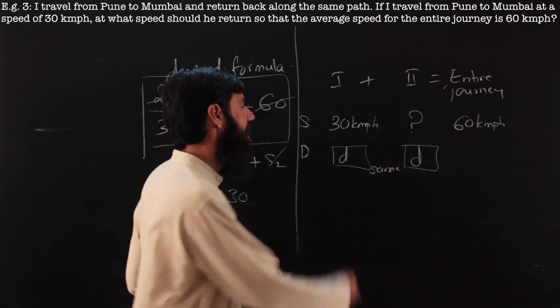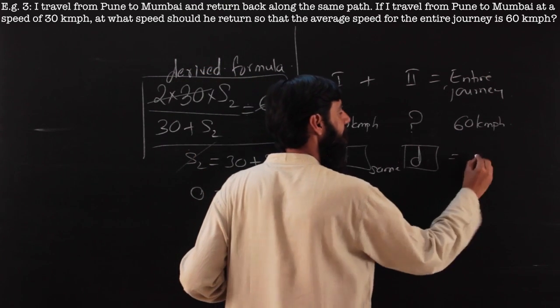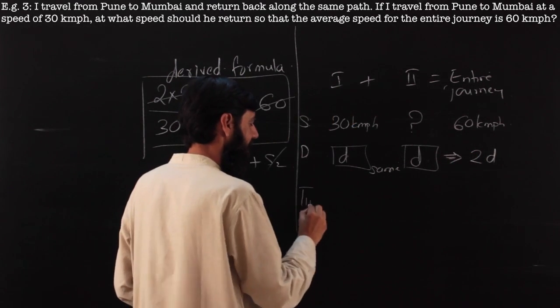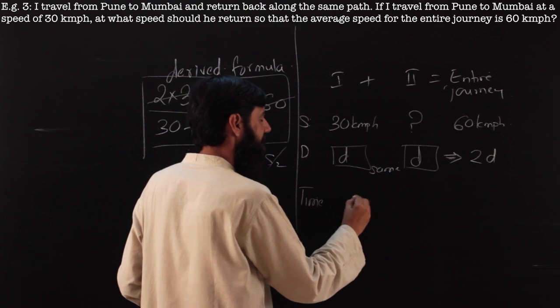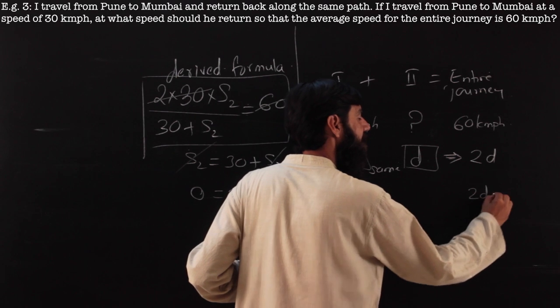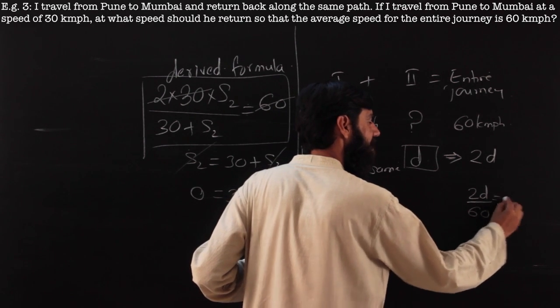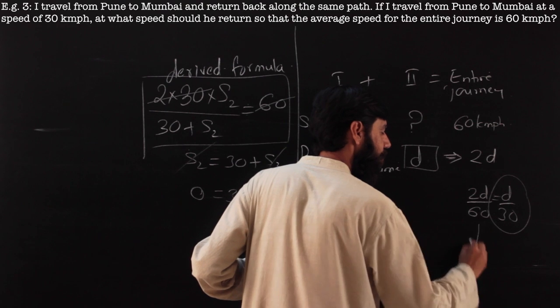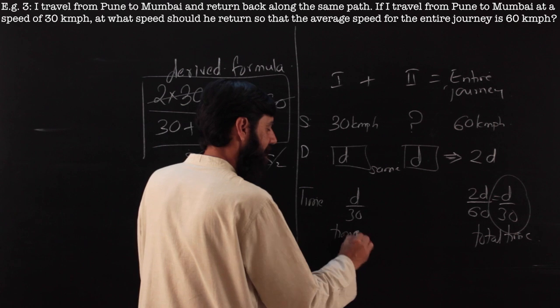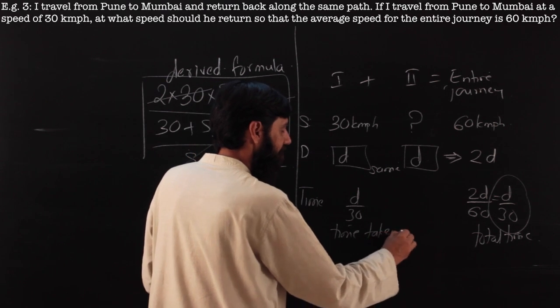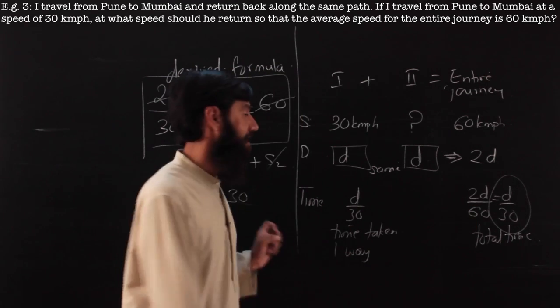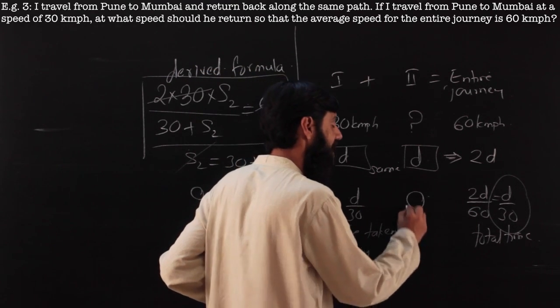If I want to just use that from the same way that I did earlier, let us take the distance to be D and this to be D, then the total distance turns out to be 2D. From speed and time I can find time. The time taken here is going to be distance by speed. The time taken here is going to be distance by speed, which is same as D by 30. This is the total time, and this is the time taken one way.